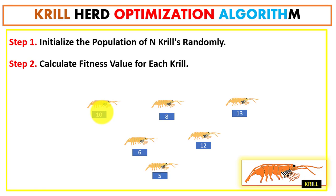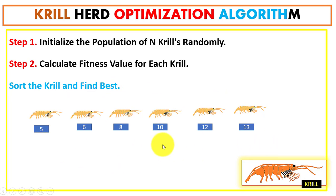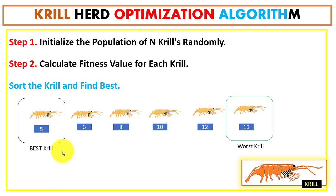In step 2, we calculate the fitness value for each krill. After computing fitness values, we sort the krills to find the best and worst in the population. Since this is an optimization algorithm, we consider the minimum fitness value as the best, so the krill with the minimum value is the best krill.